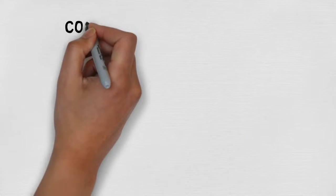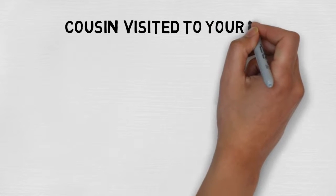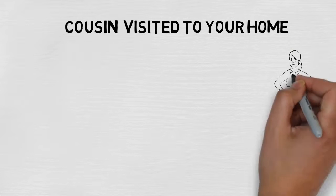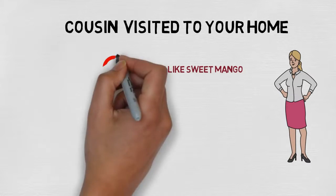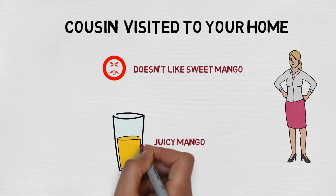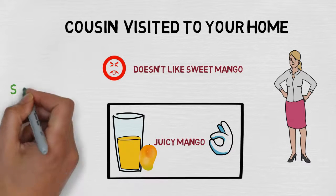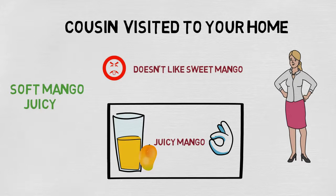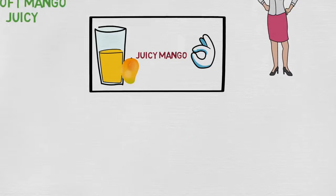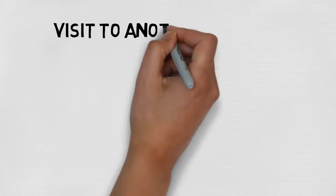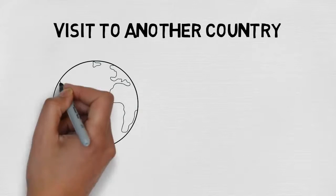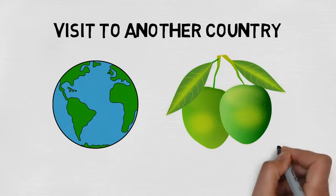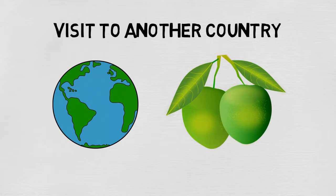One day your cousin comes to your home and you want to feed her mangoes. You apply all your rules, but your cousin doesn't like sweet mango — she likes juicy mango. You find out that soft mangoes are very juicy, so you keep adding new rules. Then you go to another country where green mangoes are the sweetest, so you update the rule again to select sweet mangoes.